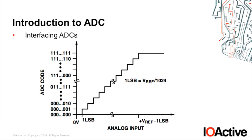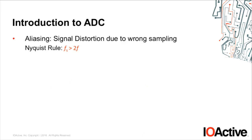This is more or less how ADCs work, and how someone who wants to implement a system or a PLC with an ADC for reading signals would program it. Since we are looking for ways to attack this, I'm going to introduce what aliasing is. We have probably studied this in high school or university. Aliasing is when there's distortion on the signal — not because the signal is wrong, but because we are not reading it in the right way.